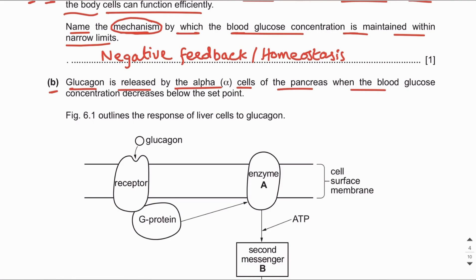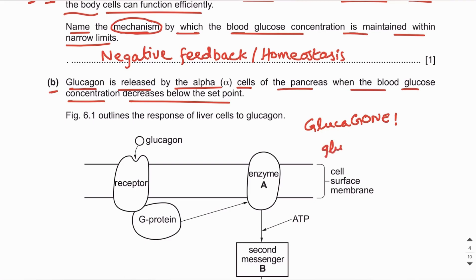Part B: glucagon is released by the alpha cells of the pancreas when the blood glucose concentration decreases below the set point. A useful way to remember this is: whenever glucose is gone, glucagon is released. It is secreted by the alpha cells of the pancreas.